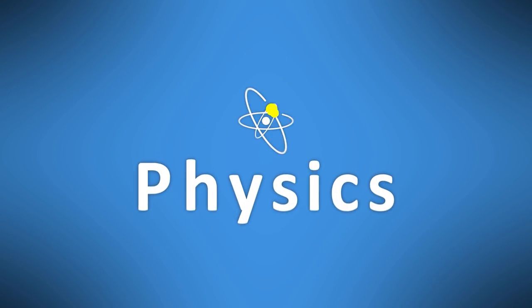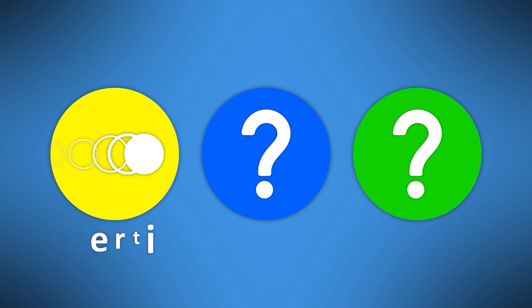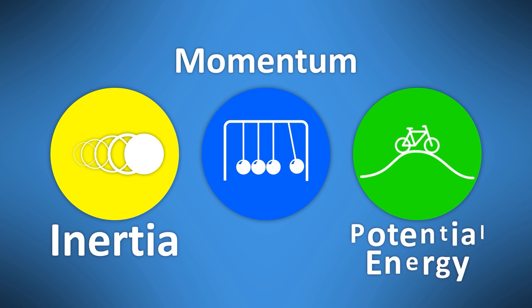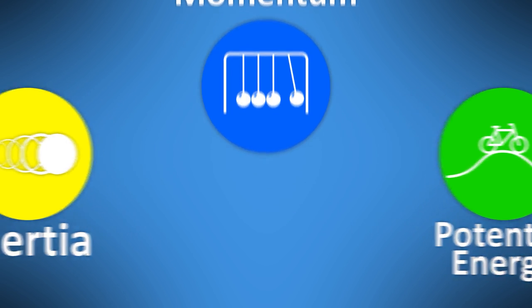In other words, let's talk a little physics. There are three forces that come into play when a vehicle collision occurs — inertia, momentum, and potential energy. Each of them will play a big role in determining how severe a crash is. Let's look at each of them, one at a time.